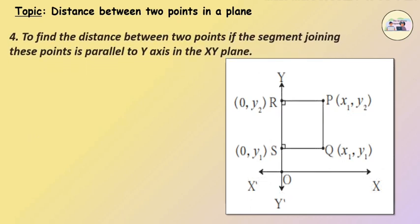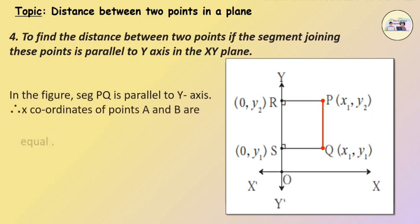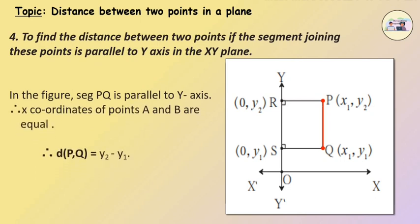To find the distance between two points if the segment joining these points is parallel to the y-axis in the xy plane: in the figure, segment PQ is parallel to the y-axis. Therefore, the x-coordinates of points P and Q are equal. Therefore, the distance of PQ is equal to y2 minus y1.